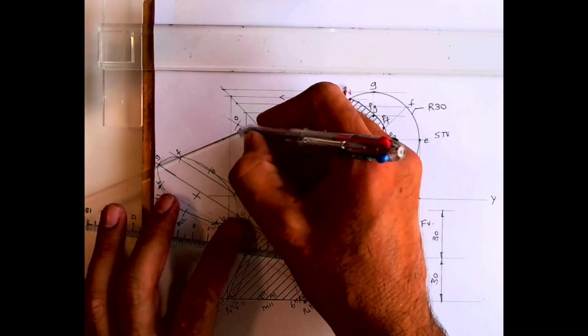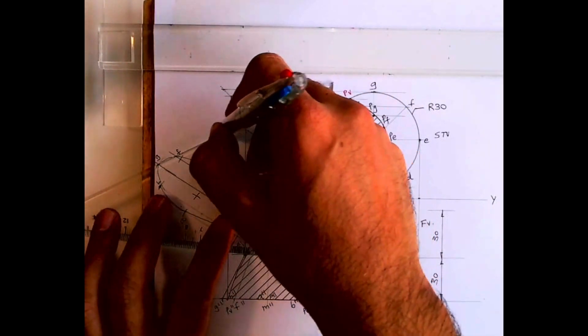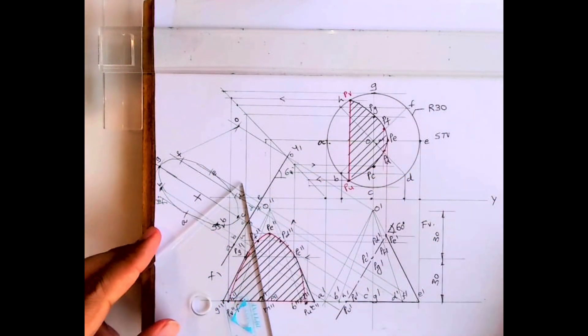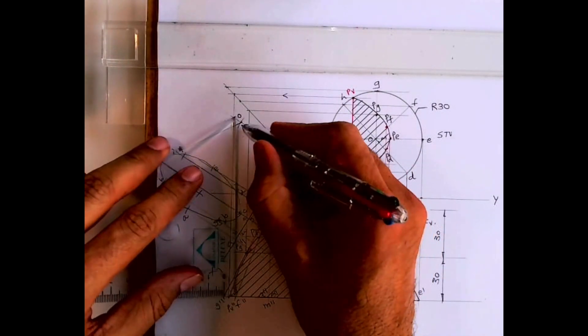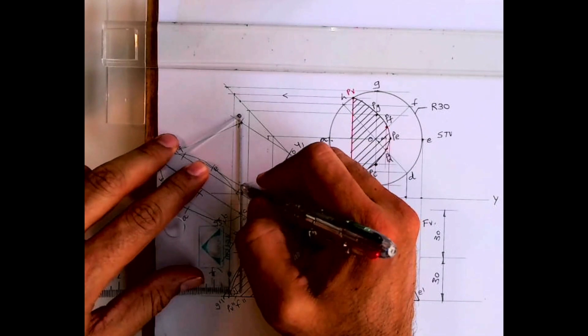Can you take tangent from here? So you always remember in case of cone it is tangent. It is not directly o to g or o to c, it is tangent to that curve. So that you should keep in mind.